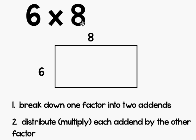So let's pretend that you didn't already know that the area of this rectangle was 48. We can break apart a factor that we don't know so well, like the eight, into two smaller parts — two things we can add together. I know that six plus two equals eight, so I'm going to break this eight and change it into six plus two.